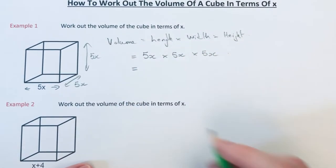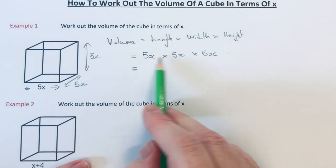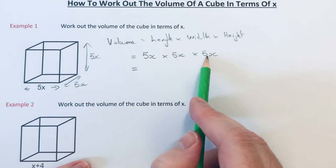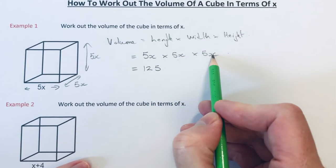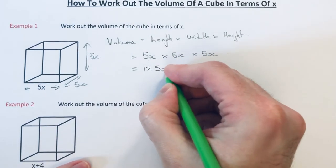So we can simplify this answer. So 5 times 5 is 25 times another 5 is 125. And x times x times x can be written as x cubed.